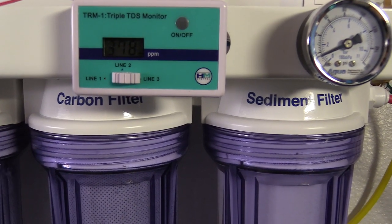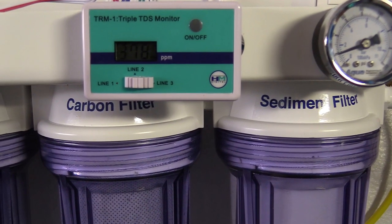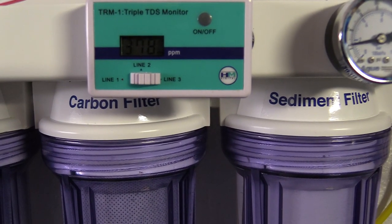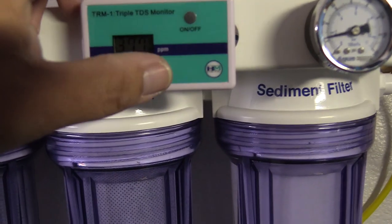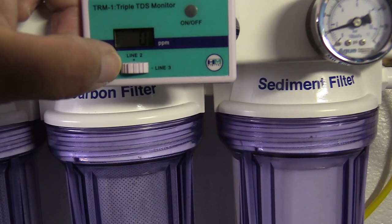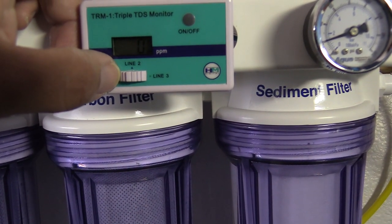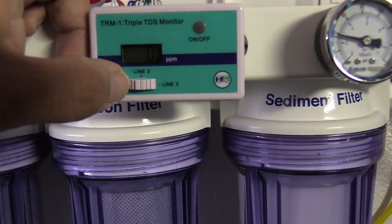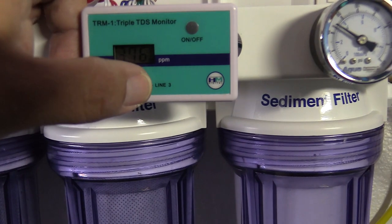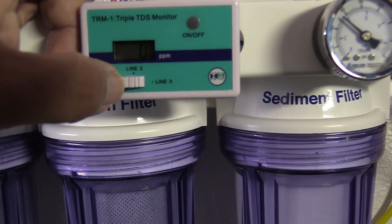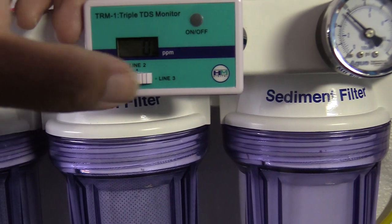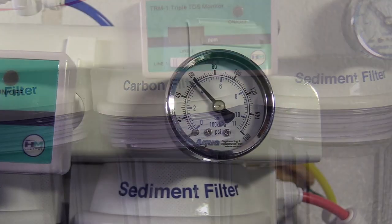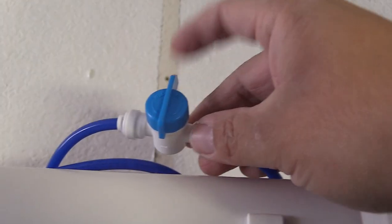As you can see on the TDS meter, it is coming in on line two. Then I'm going to switch it to line one. Line one is the output and it should be reading zero TDS. That is the last stage which is hitting the DI resin. The DI resin is going to do most of the work for your aquarium. It's going to take out everything that the carbon blocks, the sediment filter, and the membrane can't.